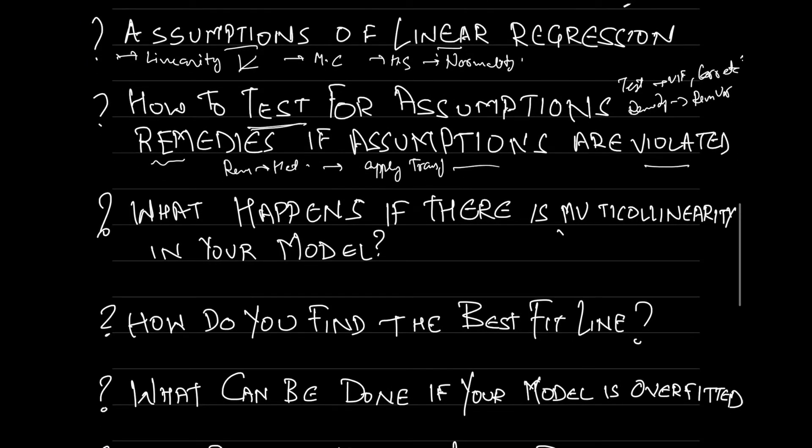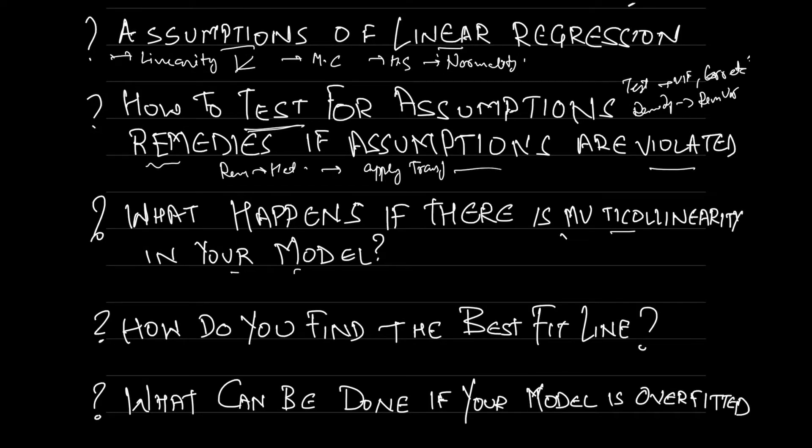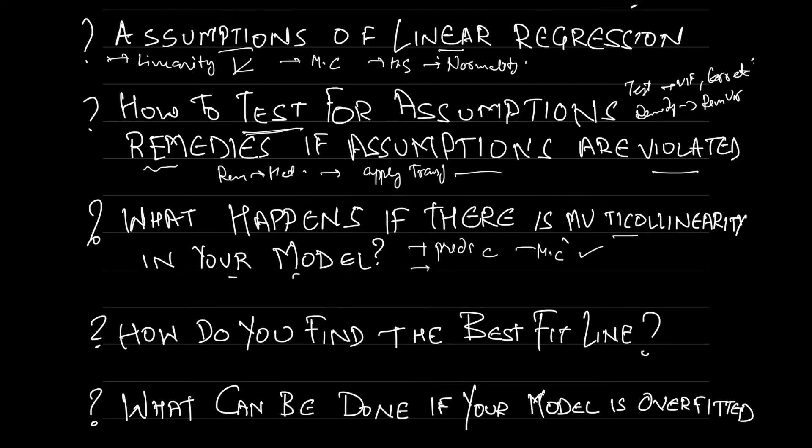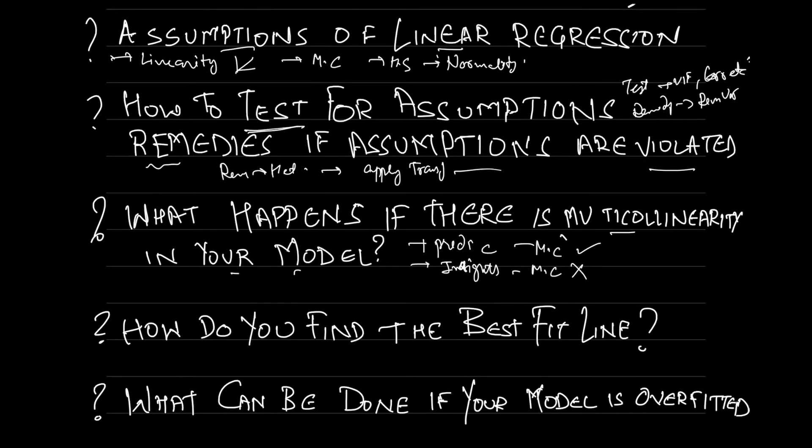Now the third question is: what happens if there is multicollinearity in your model? In this case, if your main goal is to just predict your target variable, then multicollinearity won't bother you much. But if you want to interpret your model and gain some insights, then multicollinearity will cause you a problem. Why? Because you will not be able to judge the impact of each and every independent variable on your target variable separately. Changing one variable will result in changing another correlated independent variable, and the impact of both combined will be reflected in your target variable, so the interpretation of your coefficients won't be reliable.